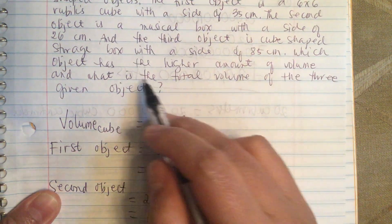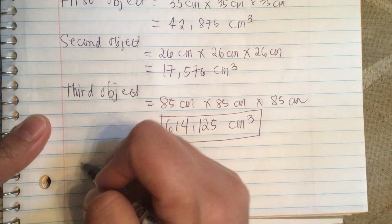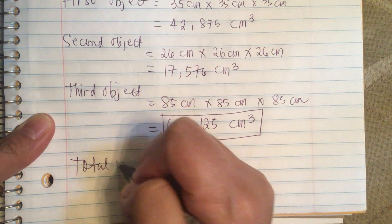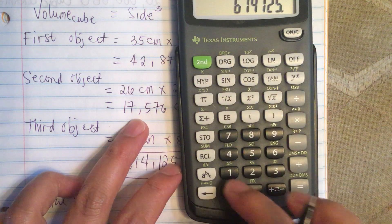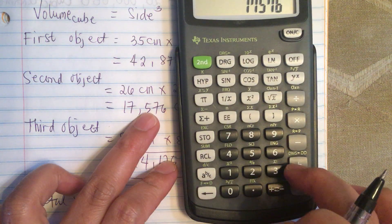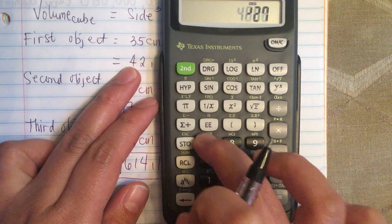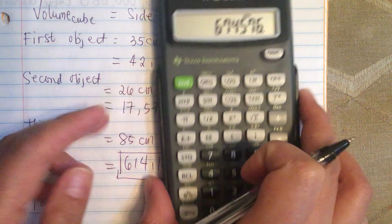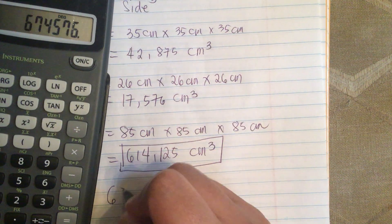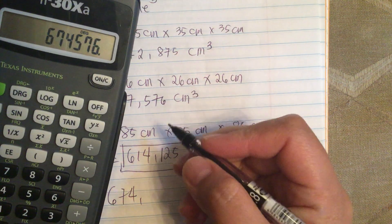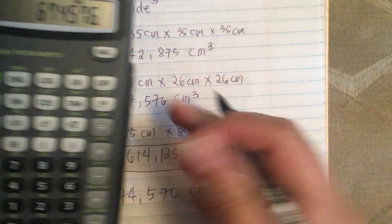And then what is the total volume of the three given objects? So total, we just add the total. So it's this plus 17,576 plus 42,875. So this is equal to 674,576 cubic centimeter.